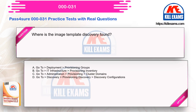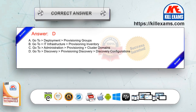Where is the image template discovery found? Option A: go to deployment provisioning groups. Option B: go to IT infrastructure provisioning inventory. Option C: go to administration provisioning cluster domains. Option D: go to discovery provisioning discovery configurations. The correct answer is option D.